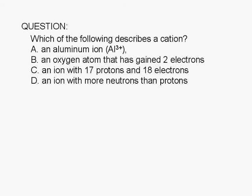Which of the following describes a cation? A, an aluminum ion. B, an oxygen atom that has gained two electrons. C, an ion with 17 protons and 18 electrons. Or D, an ion with more neutrons than protons.